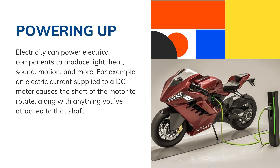Electricity can power electrical components to produce light, heat, sound, motion, and more. For example, an electric current supplied to a DC motor causes the shaft of the motor to rotate, along with anything attached to that shaft. You can power speakers, light bulbs, LEDs, and motors with electricity — meaning electricity can be used to run electrical parts that make light, heat, sound, and motion.